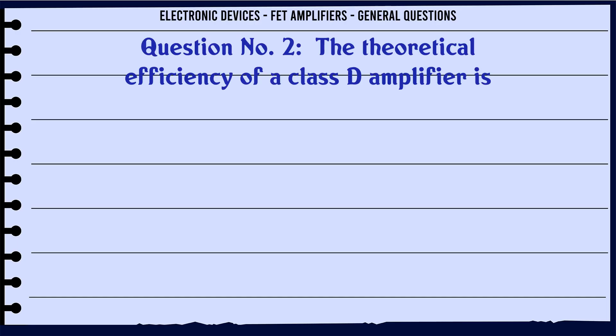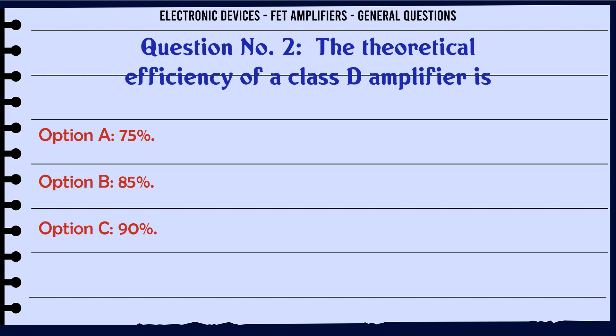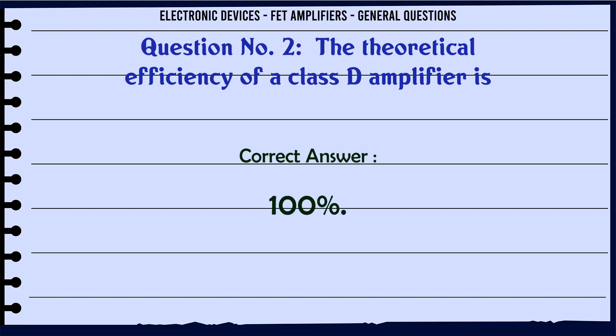The theoretical efficiency of a class D amplifier is: A. 75%. B. 85%. C. 90%. D. 100%. The correct answer is 100%.